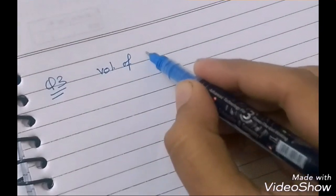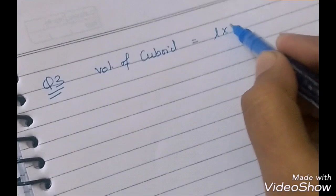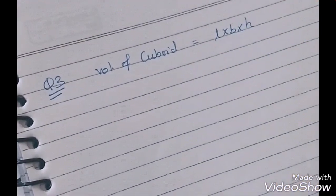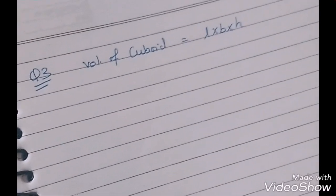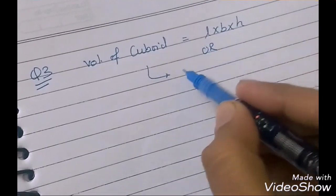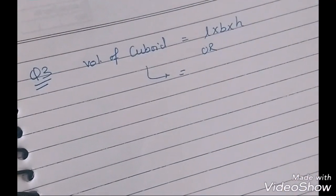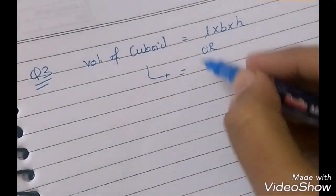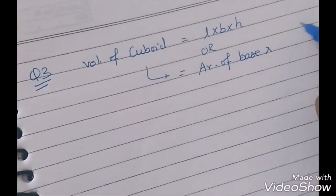Volume of cuboid: L into B into H. You are perfectly fine what you are saying. But what is the general formula for volume? Area of base into height. Area of base into height.